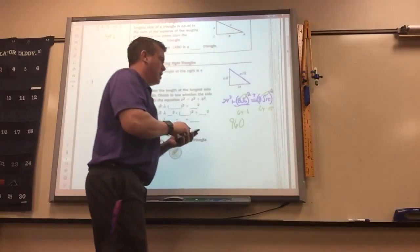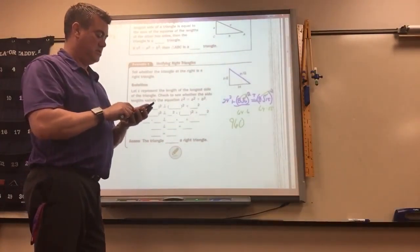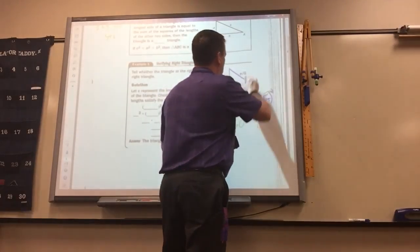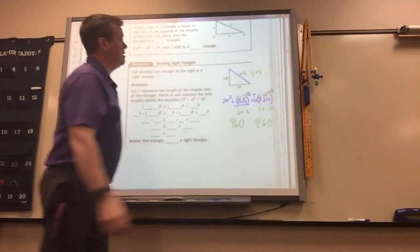So this is 960 on this side. So when we do that one, you also get 960. So this is yes, that does make a right triangle.